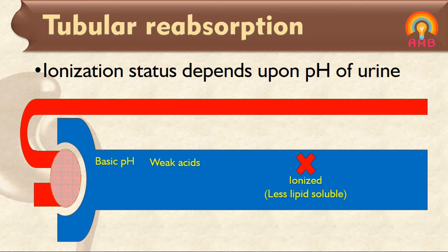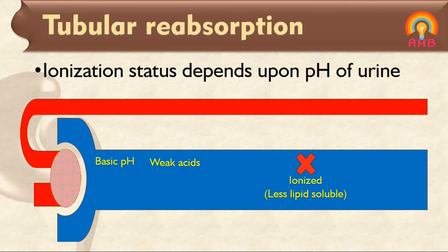This phenomenon is very important in treatment of poisoning. If the poison is acidic in nature, then to improve its excretion, urine should be made alkaline. And if the poison is basic in nature, then to improve its excretion, urine should be made acidic. That is the effect of urinary pH on the elimination of substances.